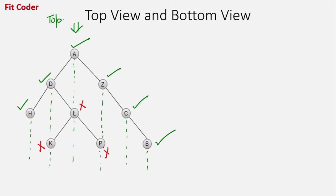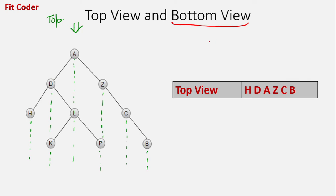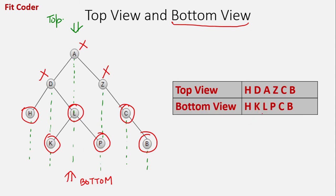So the top view will consist of nodes h, d, a, z, c, b. The bottom view will consist of those nodes which would be visible when we view this tree from the bottom. The nodes that would be visible are h, k, l, p, c and b. Because d will be hidden by node k, a will be hidden by node l, and z will be hidden by node p. So the bottom view consists of nodes h, k, l, p, c, b. Given a tree we have to find the top view and the bottom view.